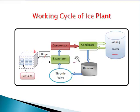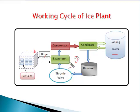Now we will discuss the working of the cycle. The first cycle is completed through the compressor, condenser, reservoir, throttle valve, and evaporator. This cycle is known as the vapor compression refrigeration cycle, and it is also known as the primary cycle. In this cycle we are using the primary refrigerant. The purpose of the primary cycle is to absorb heat by the primary refrigerant.